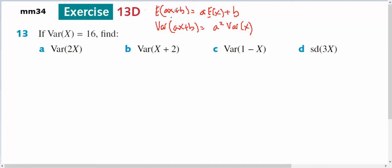So the expected value of a times x plus b will be a times the expected value of x plus b. But the variance of ax plus b is a squared times the variance of x.